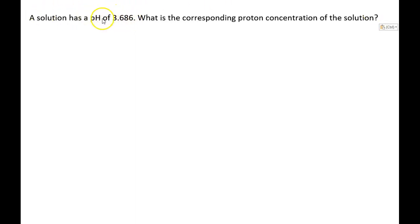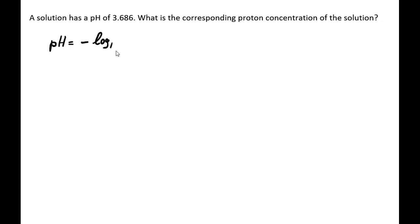In this example, we know the pH of a solution and we want to calculate the corresponding proton concentration of this solution. That's fairly easy if we simply go back to the definition of pH. We know that the pH is defined as the negative logarithm to the base 10 of the proton concentration of a solution.